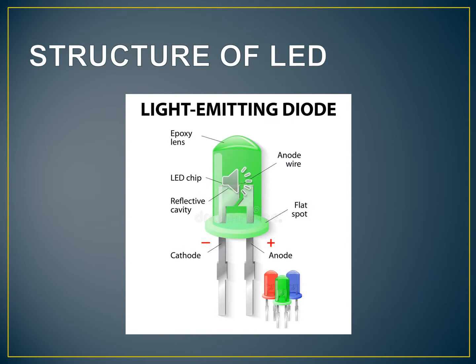So here is the structure of LEDs. We have been provided with cathode, anode, flat spot, anode via LED chip, reflective cavity, and epoxy lens. This flat part is known as anode.